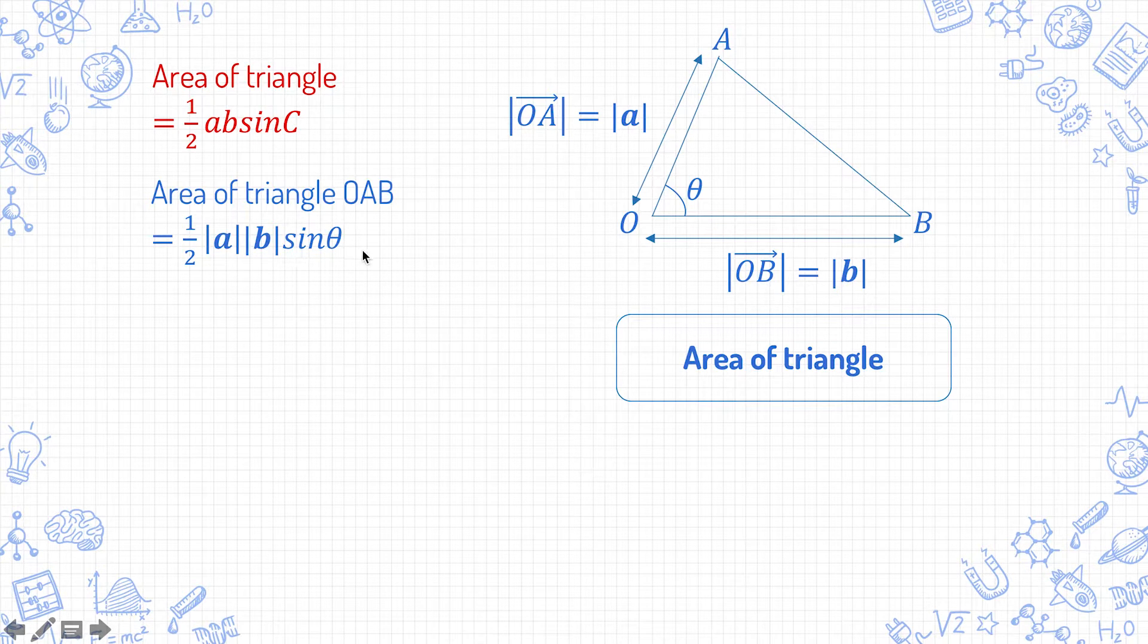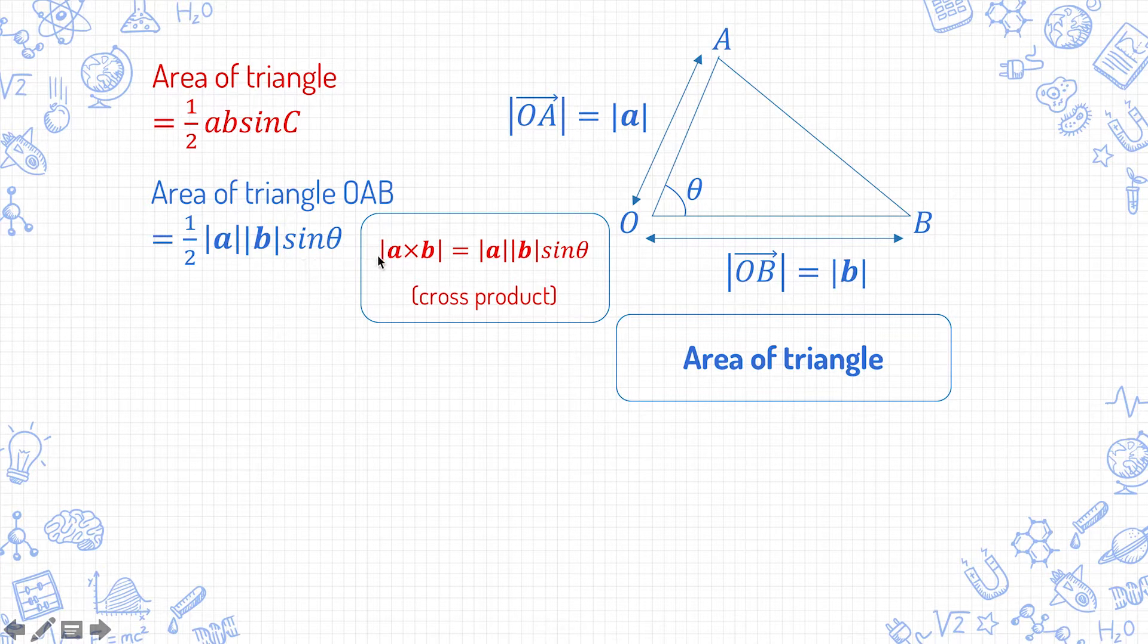the area of triangle OAB is actually equal to half times mod a times mod b sin theta. And if you compare this to the definition of the cross product, mod of a cross b equals mod a mod b sin theta. So actually this part is just half mod a cross b.